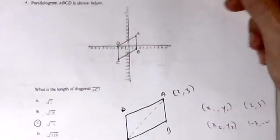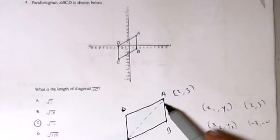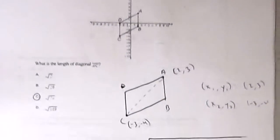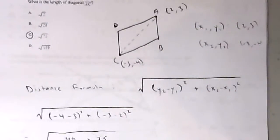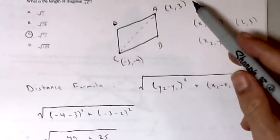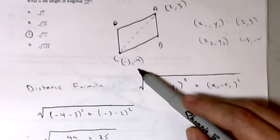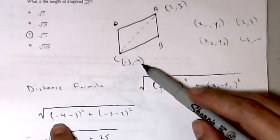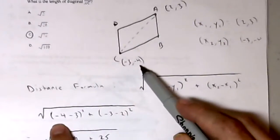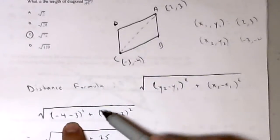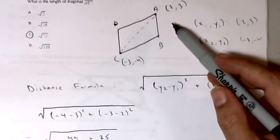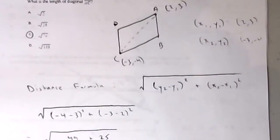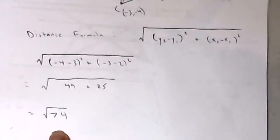Parallelogram ABCD is drawn below. What is the length of diagonal AC? The points are (2, 3) and (−3, −4). Using the distance formula: (−4 − 3)² + (−3 − 2)² = (−7)² + (−5)² = 49 + 25 = 74. So the length is the square root of 74.